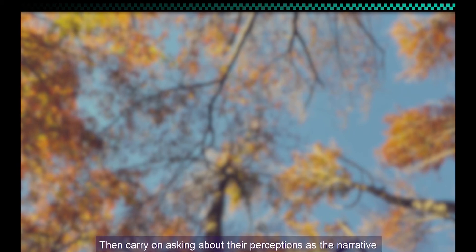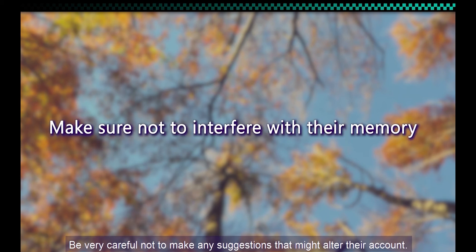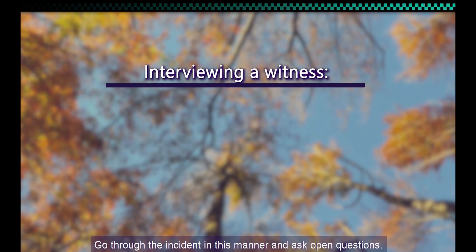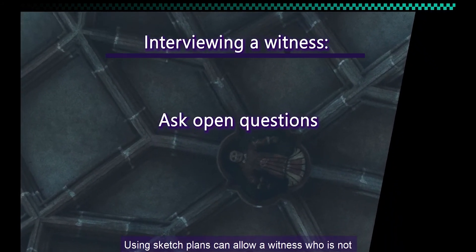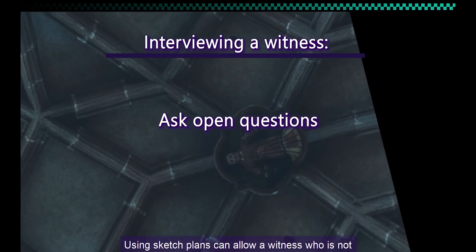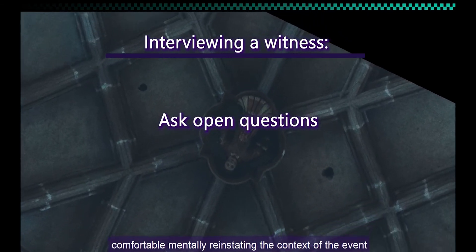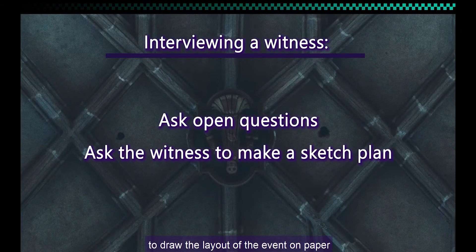Then carry on asking about their perceptions as the narrative of their account moves closer to the incident in question. Be very careful not to make any suggestions that might alter their account. Go through the incident in this manner and ask open questions. Using sketch plans can allow a witness who is not comfortable mentally reinstating the context of the event to draw the layout of the event on paper and describe the incident using that drawing.